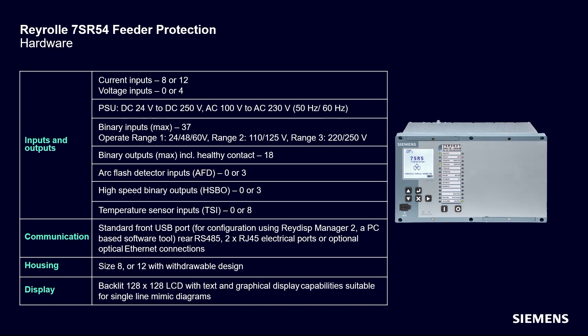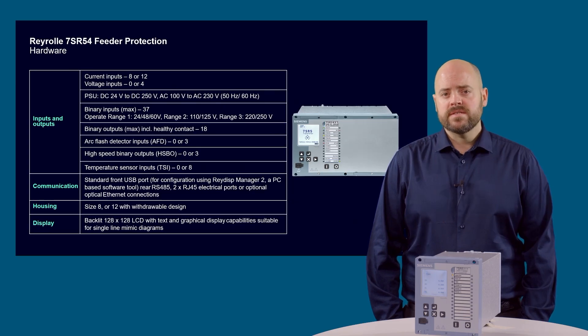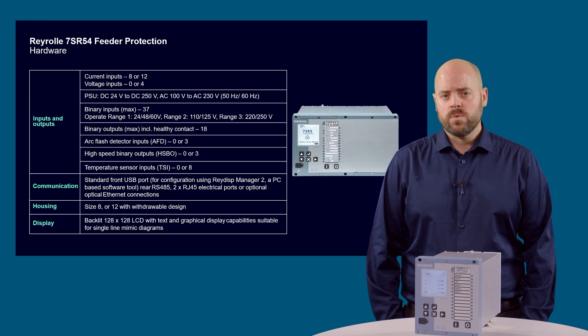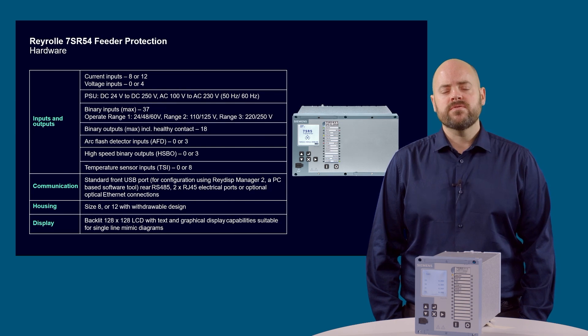The device has a rear RS485 port and dual Ethernet ports with either electrical or optical interfaces. Communication protocols include IEC61850, Modbus TCP, DNP3-TCP, and redundancy protocols. The smaller S8 devices have a case width of 205mm and the largest S12 is 308mm wide. A large graphical display makes it easier to view device information.